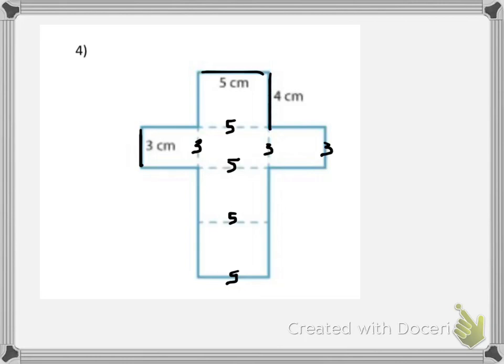If I fold this up to make a rectangular prism, these two pieces, let me highlight them in yellow, they would meet up and match up. So that means they both have to be 4 centimeters.